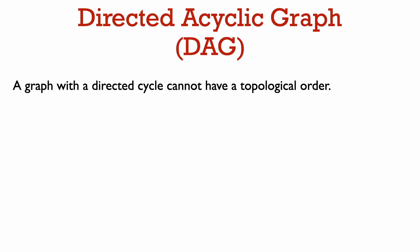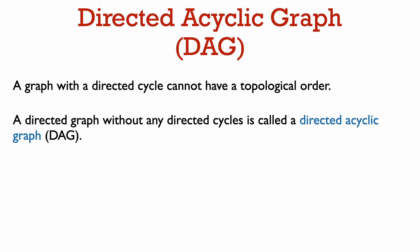From this example, we see that a graph with a directed cycle cannot have a topological order. So this motivates the study of directed graphs that do not have any directed cycles. Such a graph is called a directed acyclic graph. Acyclic meaning that it doesn't have any cycles. Usually we call a directed acyclic graph a DAG after its acronym.